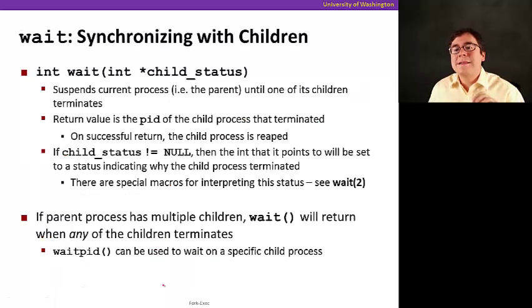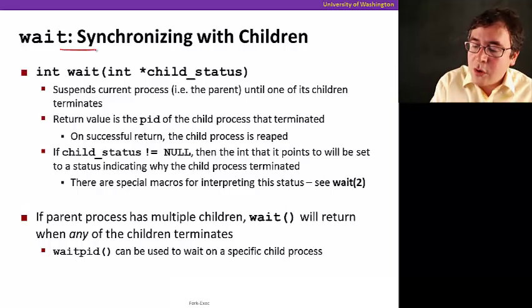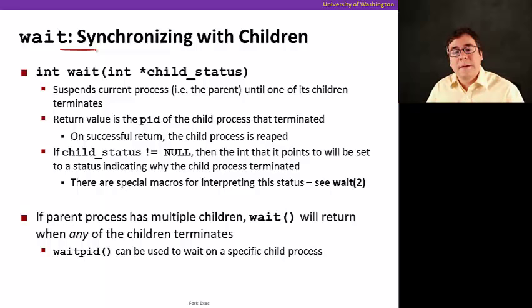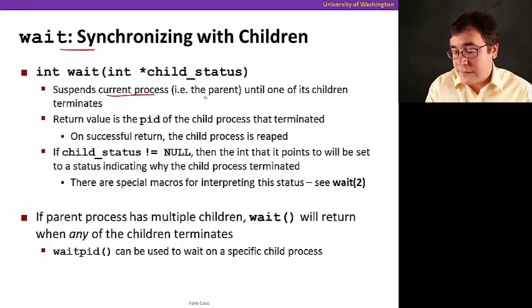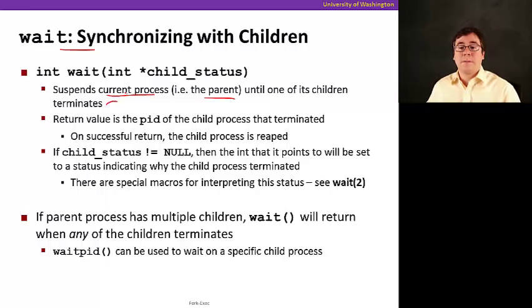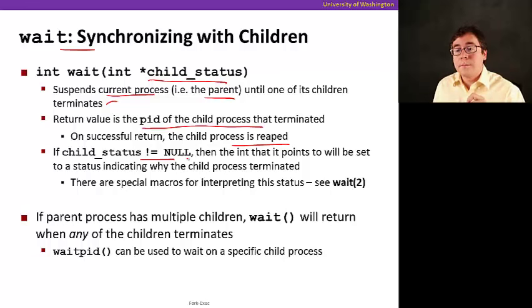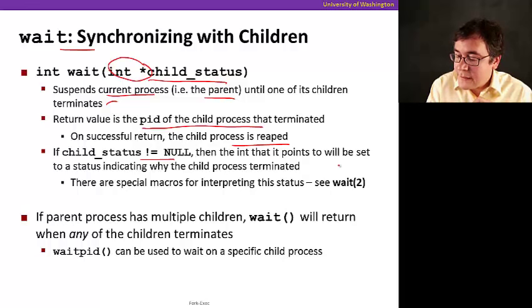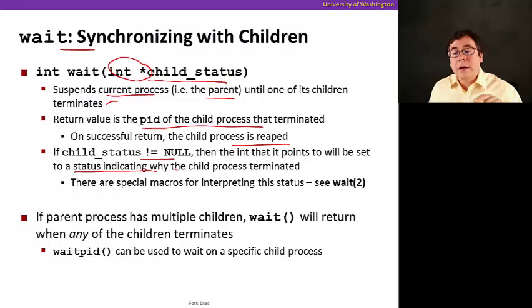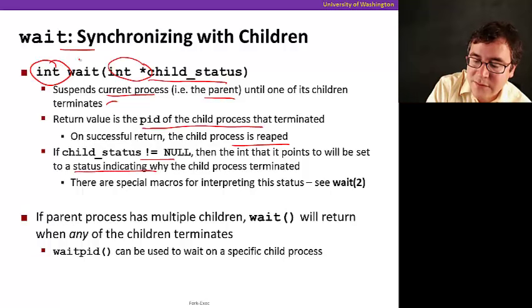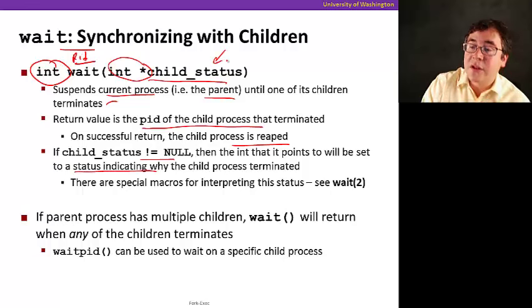So now that we know what happens when the process dies, let's see how we use that for synchronization. There's this function called wait that's used to synchronize with children processes. So what it does is when you call wait, it suspends the current process, for example the parent, until one of its children terminates. And the return values, the PID of the child process are terminated because a parent could have multiple child that it's waiting to die on. And on successful return, the child process is then reaped. And by the way, if the child status is set to not null, this is a parameter to the wait function, if it's set to not null, then the integer that it points to, because notice that it's an integer pointer, then that it points to will be set to a status indicating why the child process terminated. So because now we can read the exit status of the process. This int return here just returns the PID. That's the PID. And this points to the status at exit that the child had.